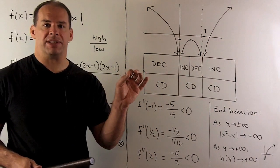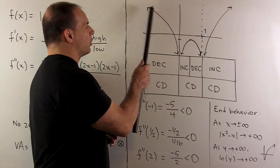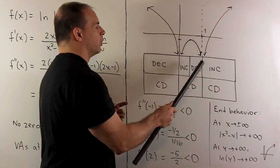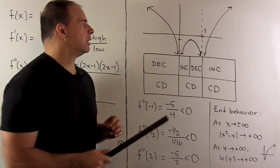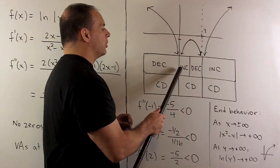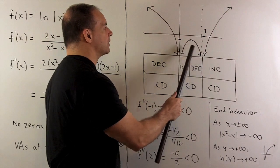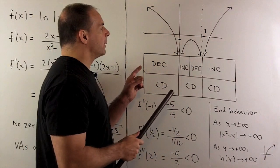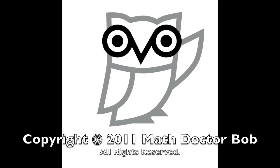Now we connect all the pieces. For x < 0: decreasing and concave down, going to +∞ as x → -∞ and down to -∞ at the vertical asymptote x = 0. For x > 1: increasing and concave down, going to +∞ as x → +∞ and down to -∞ at the asymptote x = 1. Between 0 and 1, the new piece: increasing then decreasing through the critical point at x = 1/2, concave down, with both ends going to -∞ at the vertical asymptotes. Comparing with the old graph, all we're doing is picking up this middle piece.